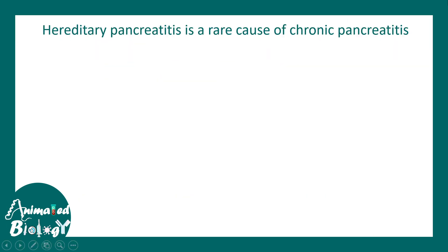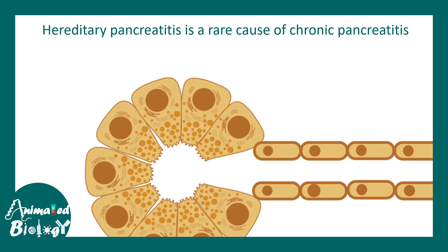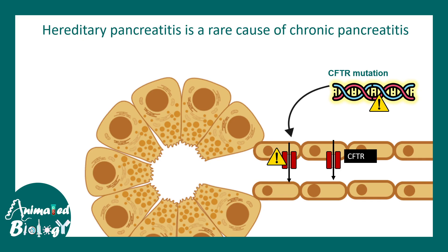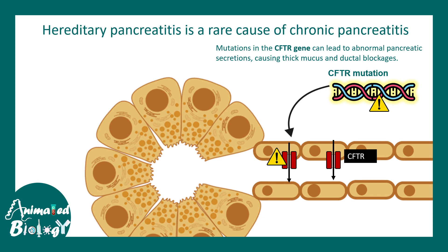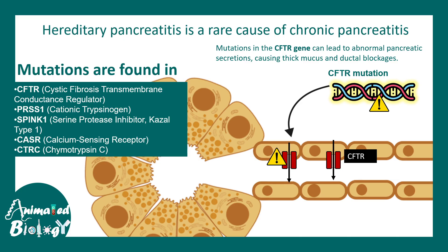Hereditary pancreatitis, which may lead to chronic pancreatitis, is extremely rare and is often due to gene mutations. CFTR maintains chloride and bicarbonate homeostasis in the pancreatic ductal system; in case of CFTR mutation, this homeostasis is altered, leading to problems with pancreatic secretion. Other mutations include PRSS1, which encodes trypsinogen, as well as SPINK1, a serine protease inhibitor, and CASR, a calcium-sensing receptor, which can also be underlying causes of chronic pancreatitis.